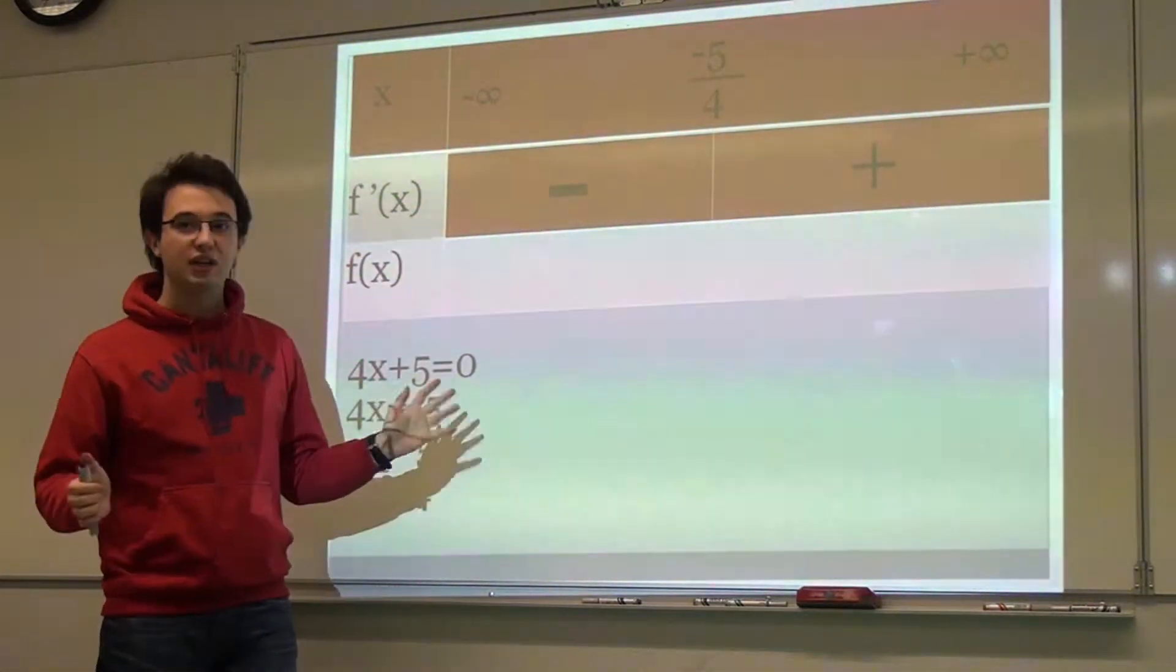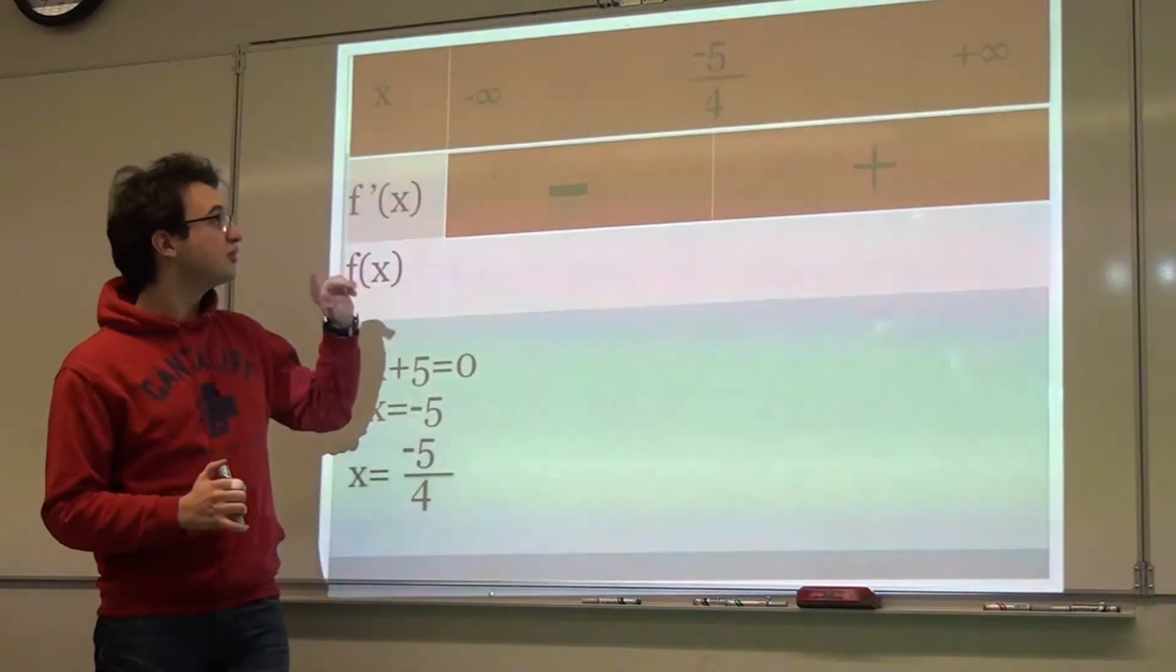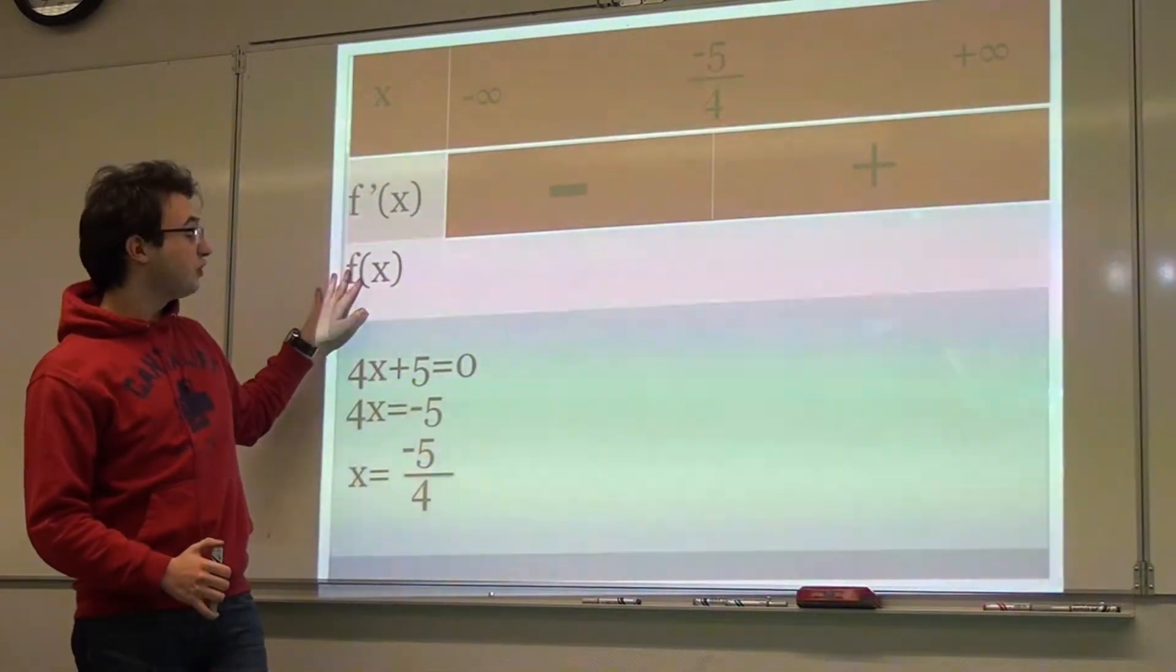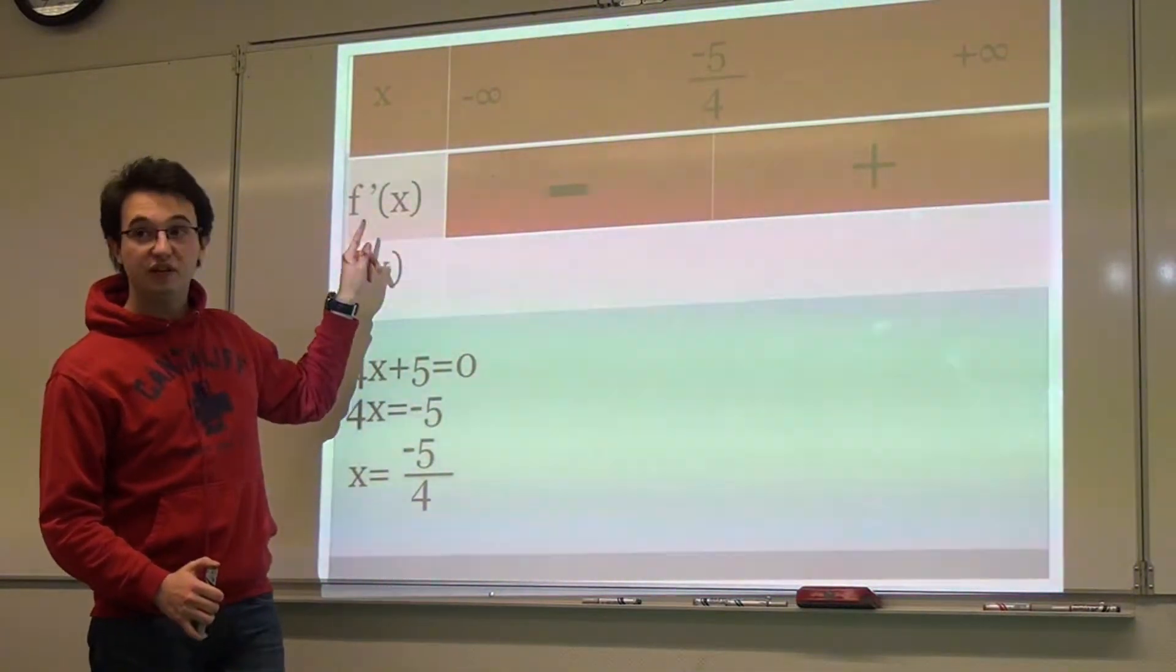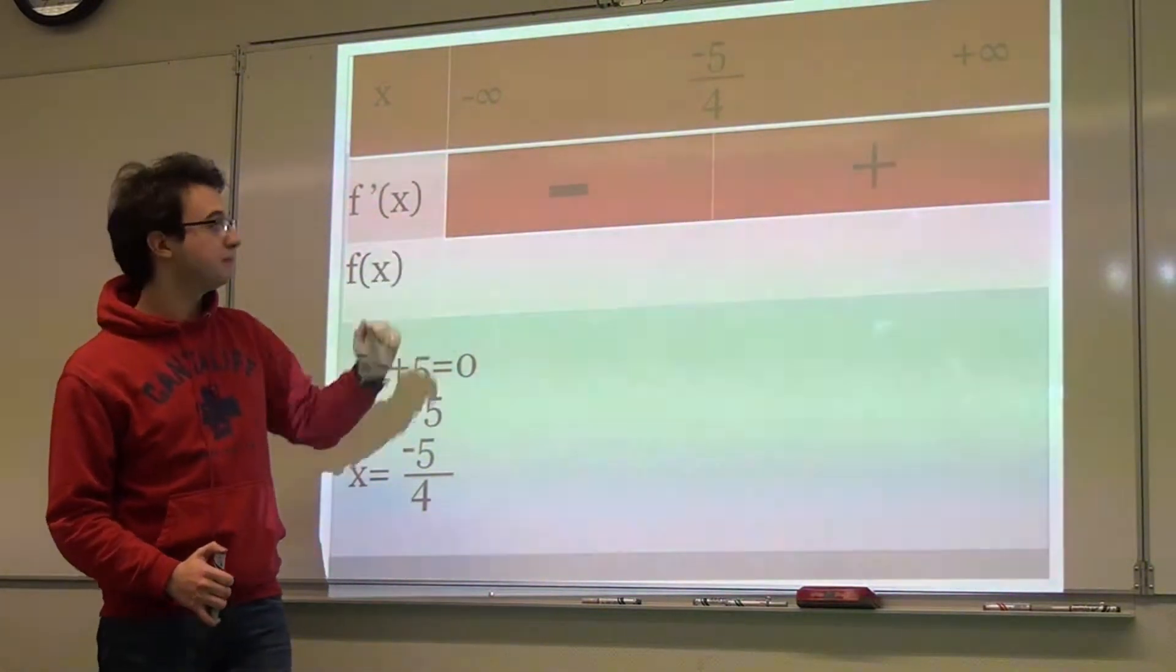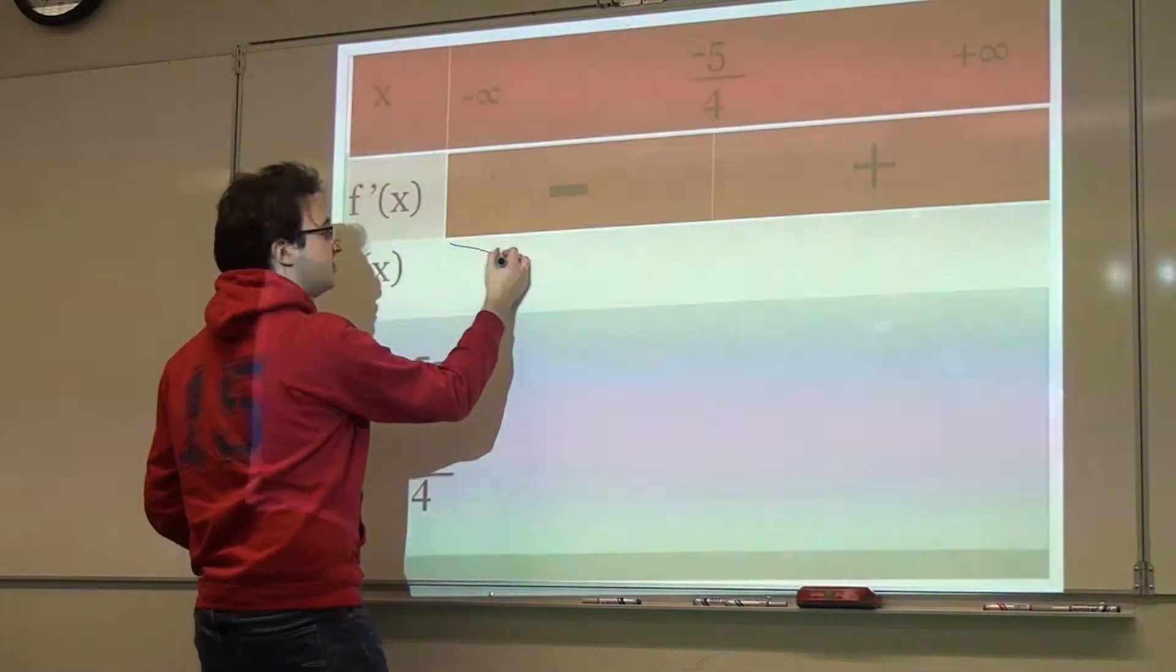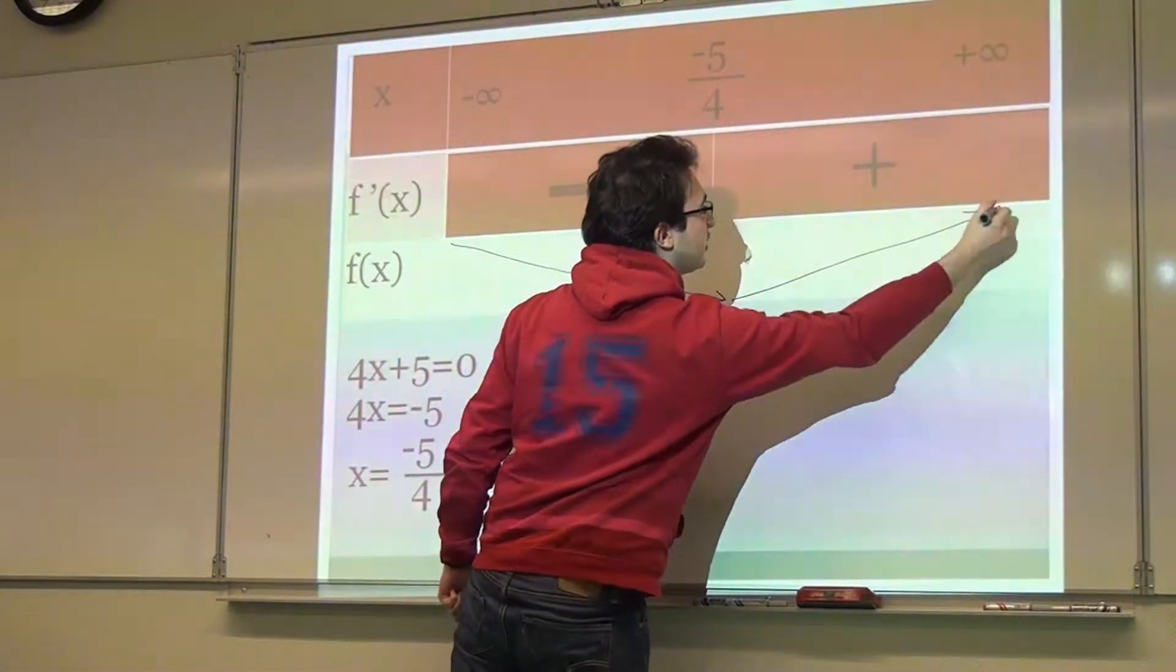So why did we find the sign of the derivative? It's because when the derivative is negative, the function is decreasing. And if the derivative is positive, the function is increasing. So here, f(x) is decreasing and then increasing.